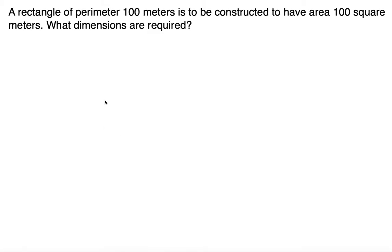A rectangle of perimeter 100 meters is to be constructed to have area 100 square meters. What dimensions are required?